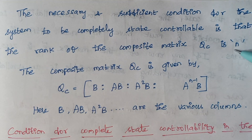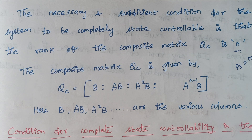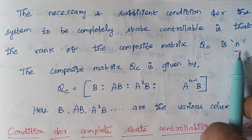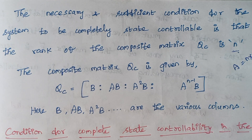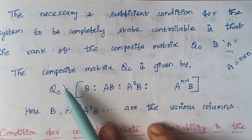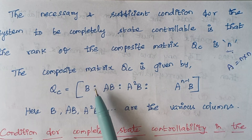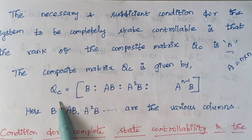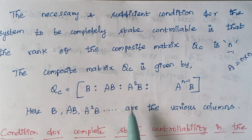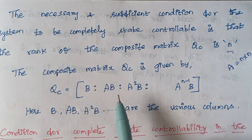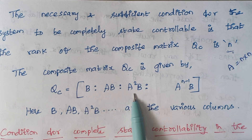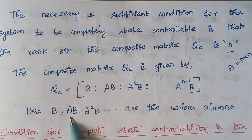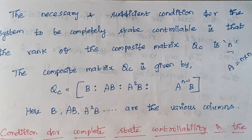The necessary and sufficient condition for the system to be completely state controllable is that the rank of the composite matrix QC is n, where n is the order of the matrix A. Whenever the rank of QC equals n, we can say the system is completely controllable. The composite matrix QC is represented by the expression [B | AB | A²B], where B, AB, and A²B are the various columns.